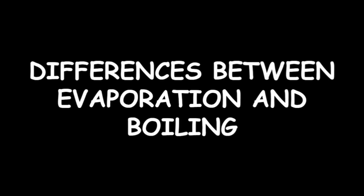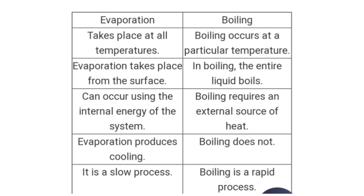What are the differences between evaporation and boiling? Evaporation takes place at all temperatures — it can take place at very low temperatures also — but boiling occurs only at a particular temperature, which we call the boiling point of the liquid. Evaporation takes place from the surface only, but in boiling the entire liquid boils. Evaporation can occur using the internal energy of the system, but boiling requires an external source of heat. Evaporation produces cooling, whereas boiling does not cause any cooling. Evaporation is a very slow process, but boiling is a rapid, fast process.